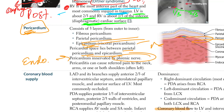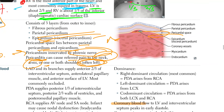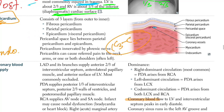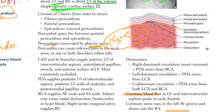Pericardium is high yield — it is innervated by the phrenic nerve. Pericarditis, which is inflammation of the pericardium, can cause referred pain to the neck, arms, or one or both shoulders — often the left. The phrenic nerve roots are C3 to C5, and the phrenic nerve innervates not only the pericardium but also the peritoneum. So if you have peritoneal inflammation — peritonitis — it will irritate the phrenic nerve and also give you pain radiating to the shoulder and neck.